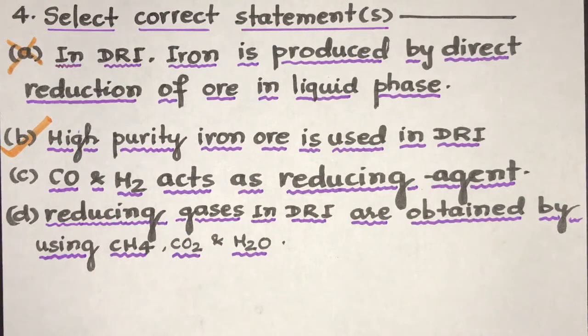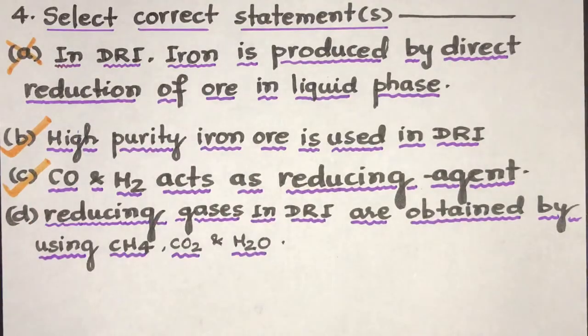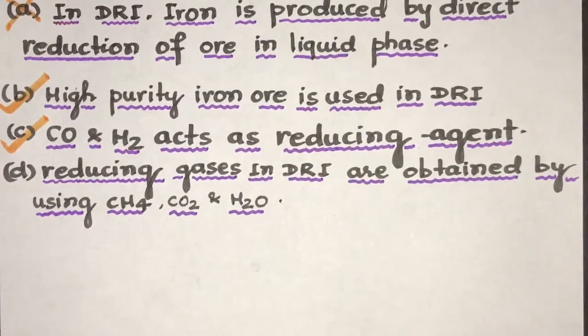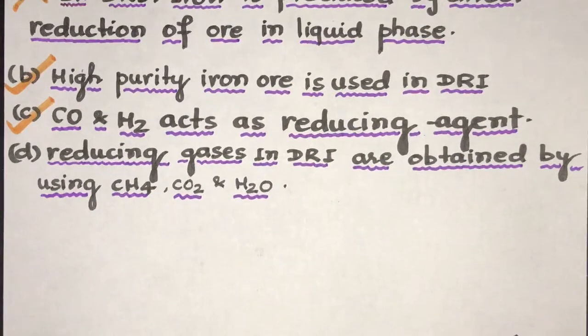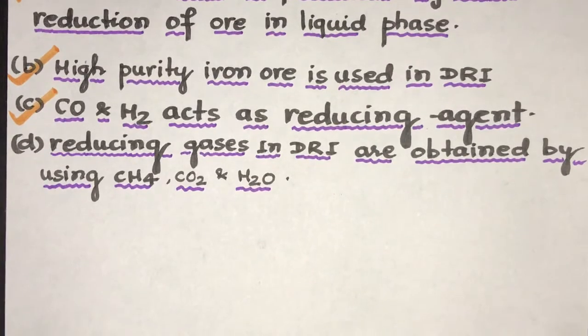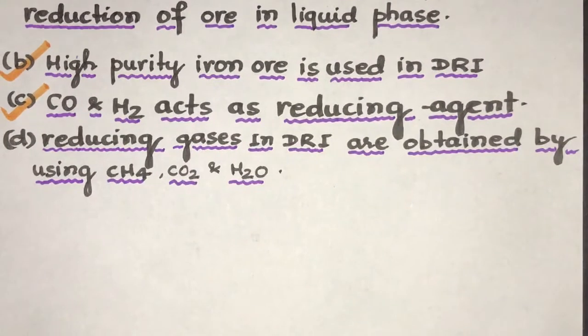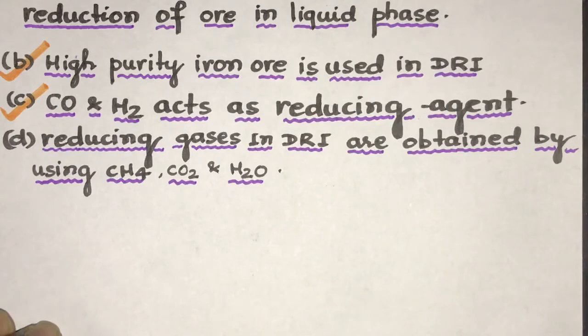Coming to the next. CO and H2 acts as reducing agent. Yes, this is absolutely correct. In DRI, we use carbon, carbon monoxide and hydrogen gas as reducing agent. And this reduces the iron 2 and iron 3 oxides in the following ways.